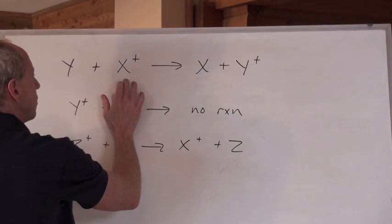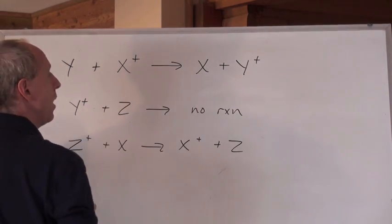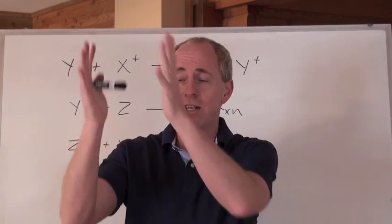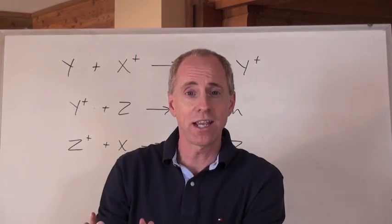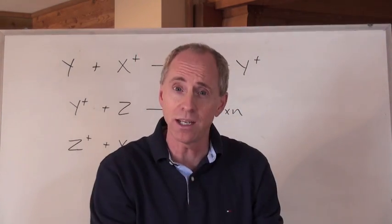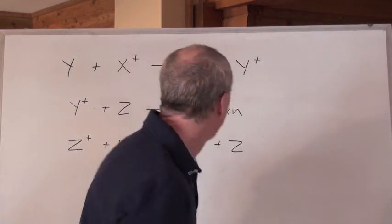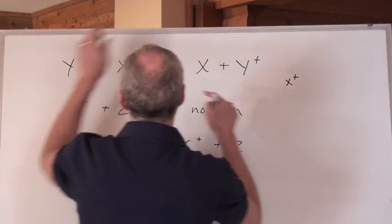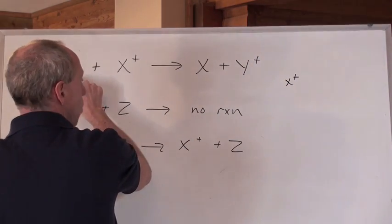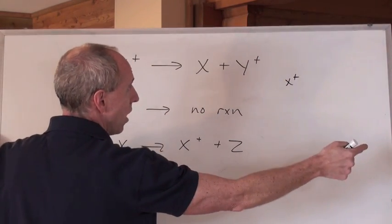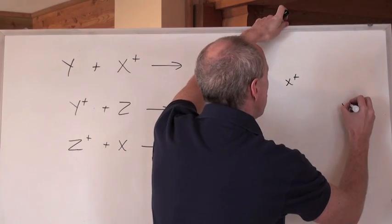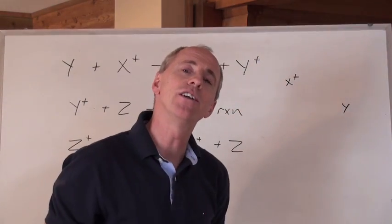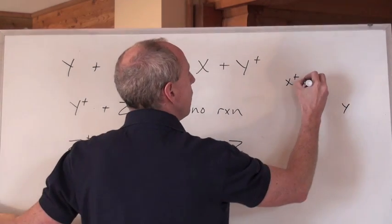Y solid reacts with X positive and the reaction does take place. Remembering that all the cations are generally on the oxidizing agent side and metals are reducing agents, then you know that X positive is going to be on the left side of the chart and the Y solid is going to be on the right side being a metal. Since it's spontaneous, the reaction occurs, it's left over right.